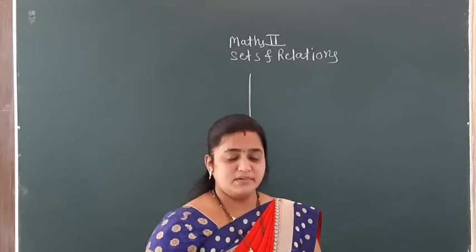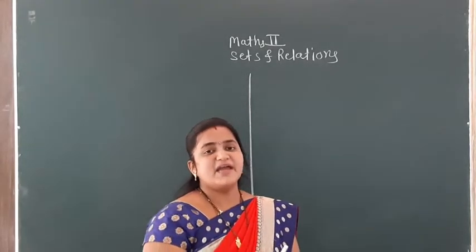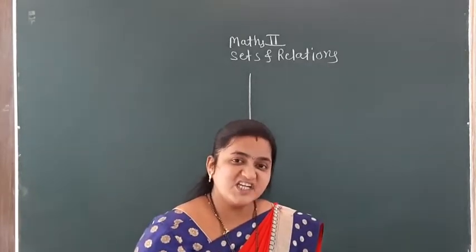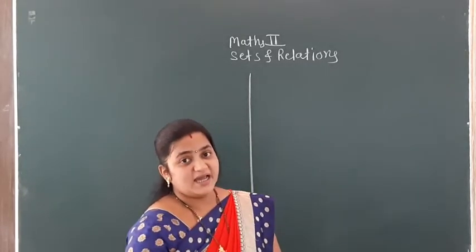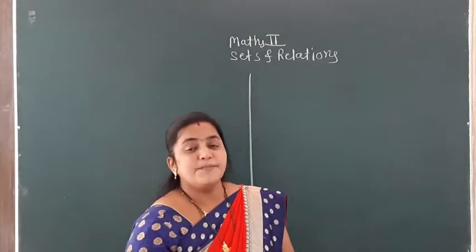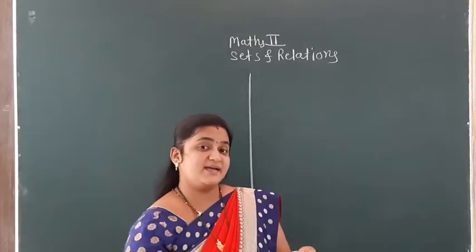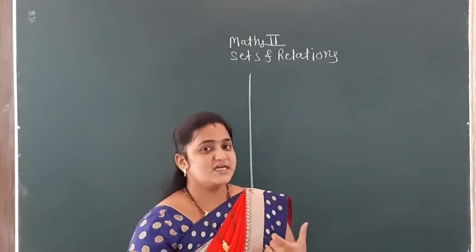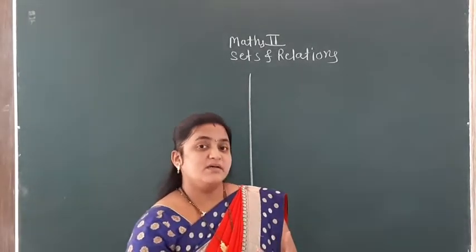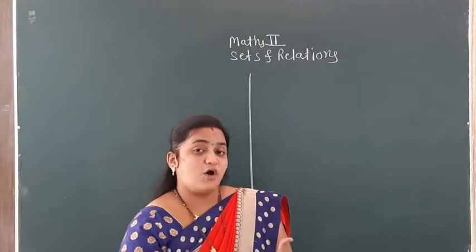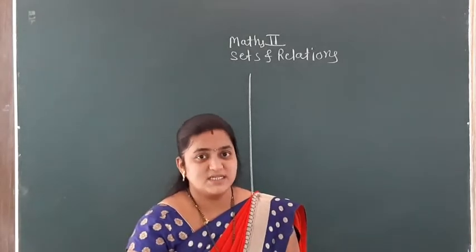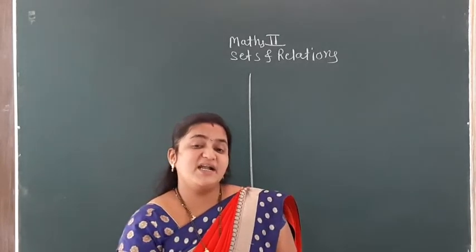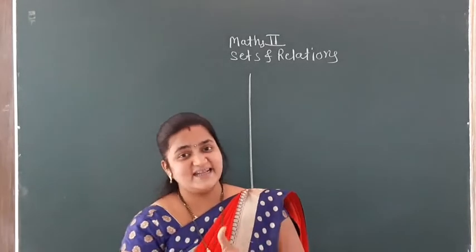We have any type of number: natural number, rational number, integer, irrational number, whole numbers. For example, if we specify 2, 4, 5, 6 — these are natural numbers, but the common property is that all are even numbers. So the set is a collection of natural even numbers which is less than a given value.